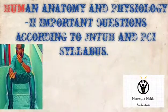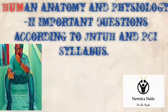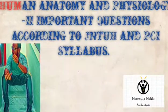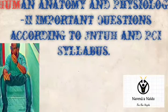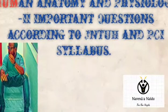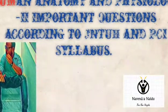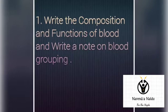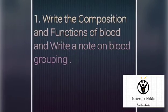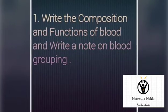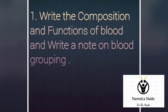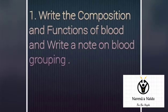Hi everyone, I am back with the Human Anatomy and Physiology 2 second semester important questions according to JNTU and PCI syllabus. The first question is: write the composition and functions of blood, and also write a note on blood grouping.